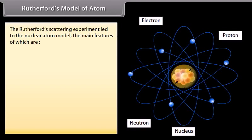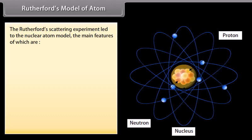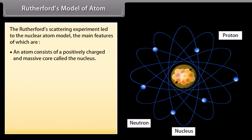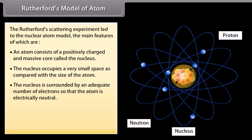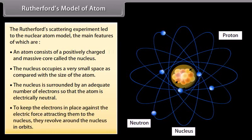Rutherford's model of atom. The Rutherford scattering experiment led to the nuclear atom model. The main features of which are: An atom consists of a positively charged and massive core called the nucleus. The nucleus occupies a very small space as compared with the size of the atom. The nucleus is surrounded by an adequate number of electrons so that the atom is electrically neutral. To keep the electrons in place against the electric force attracting them to the nucleus, they revolve around the nucleus in orbits.